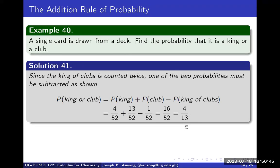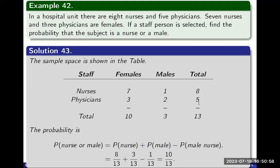When the events are not mutually exclusive, it's important that you subtract the probability of the event that is common to both of them.